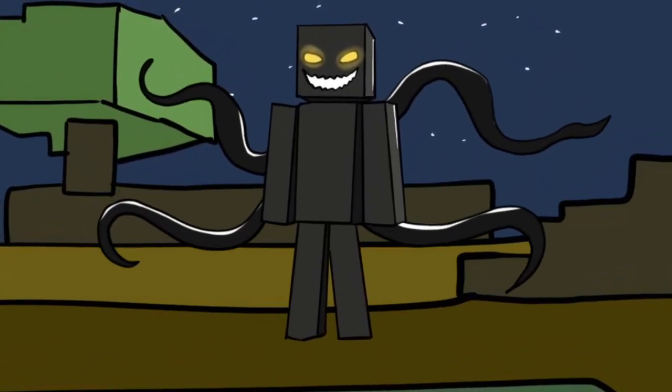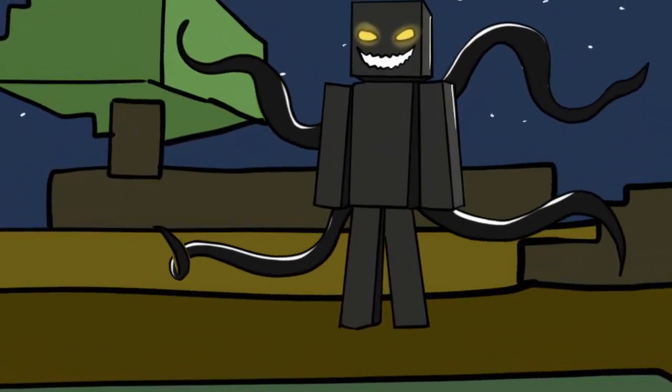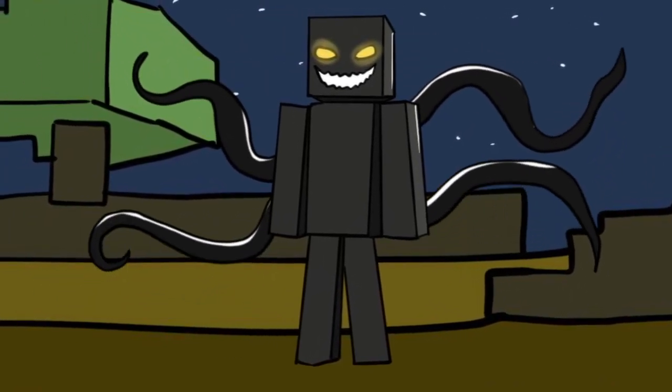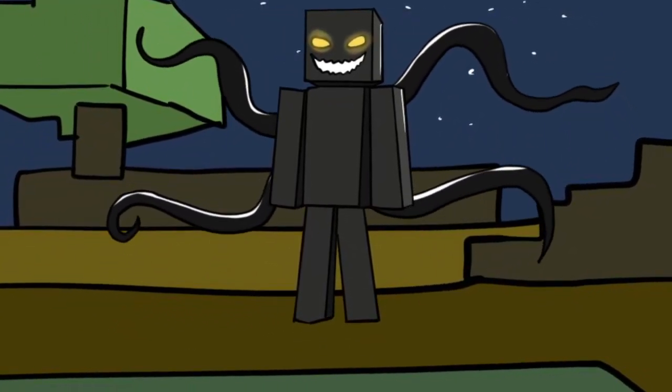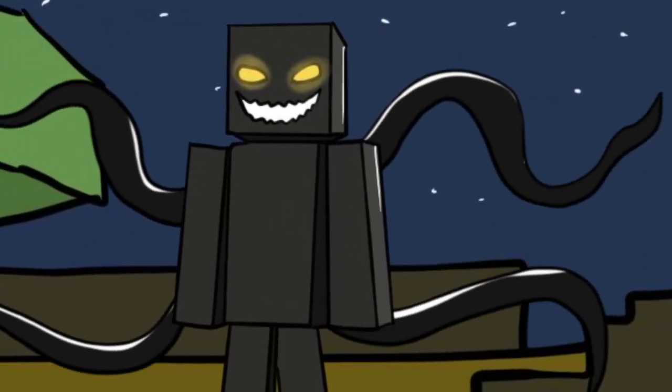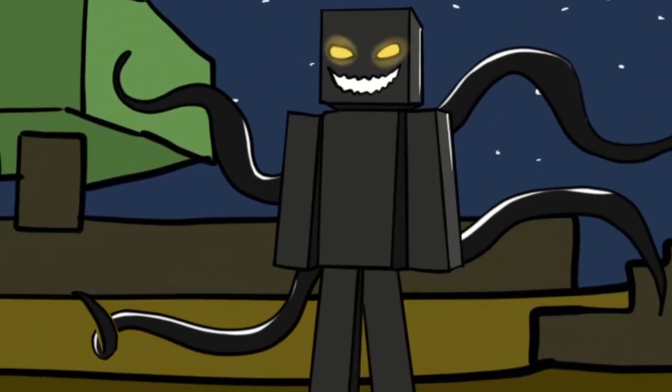SCP-4335 has the appearance of an all-black Minecraft skin. It also has yellow eyes and a white mouth that it occasionally retracts if it feels a strong emotion.